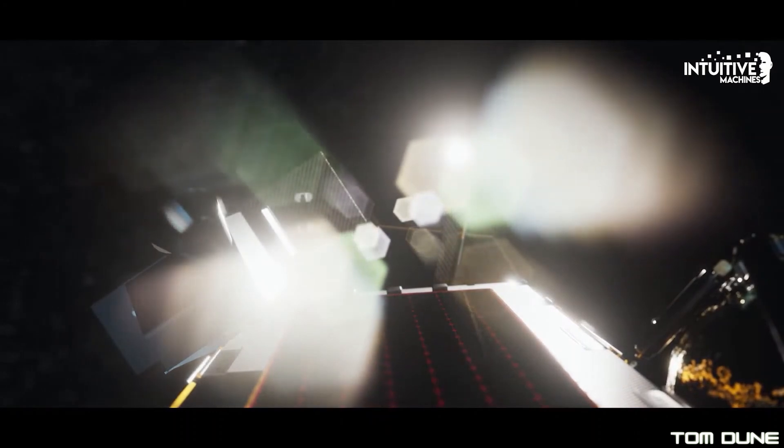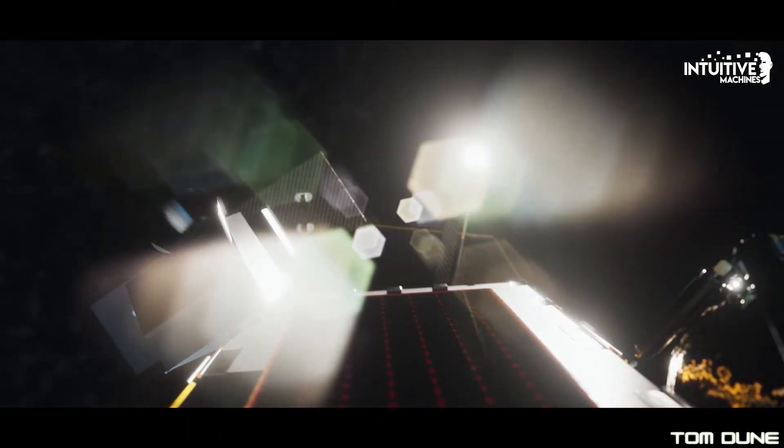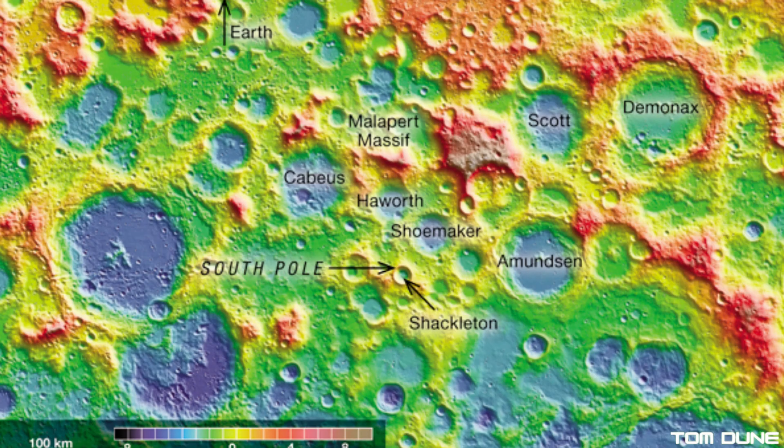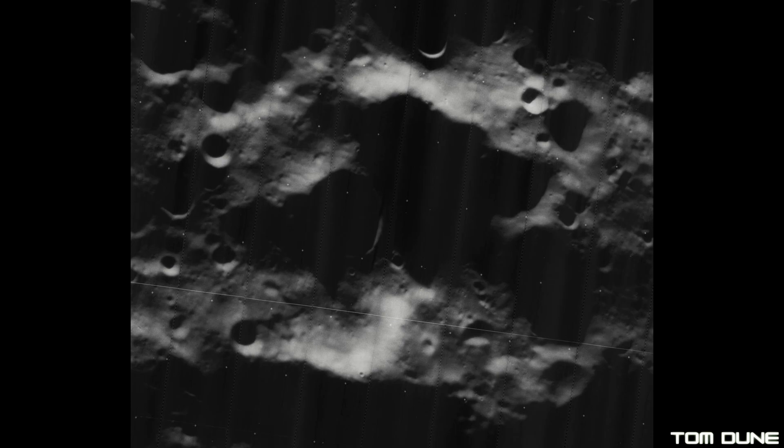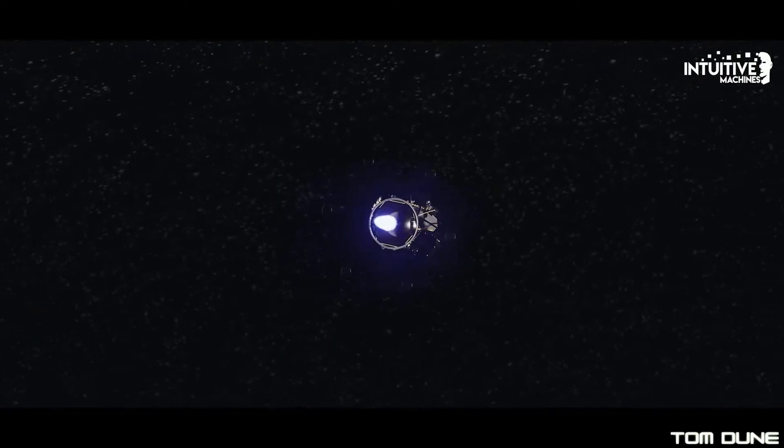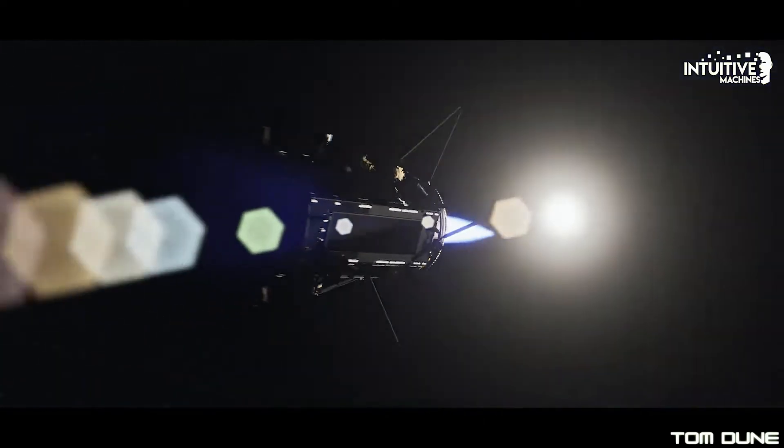Now, though, it's the turn of Intuitive Machines' Nova C Odysseus, or ODI, spacecraft to have a go. They're aiming for the Malapert-A crater near the lunar south pole, and unlike Slim, will be landing in the conventional manner, you know, with landing legs.